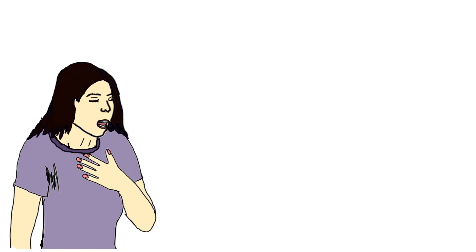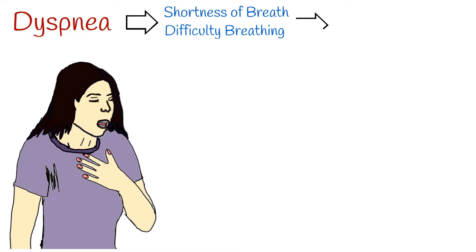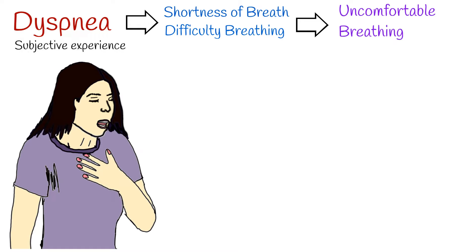Dyspnea is the subjective experience of uncomfortable breathing. It is described differently as intense tightening in the chest, air hunger, difficulty breathing, breathlessness, or a feeling of suffocation. Such differences in description exist because there is no objective criteria to describe dyspnea — it is a subjective experience. The simplest and broadest definition of dyspnea is uncomfortable breathing.